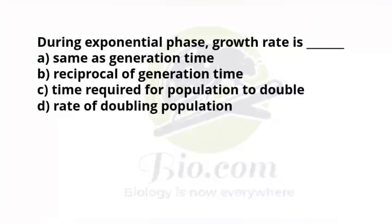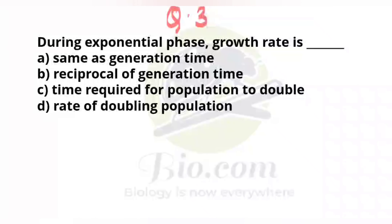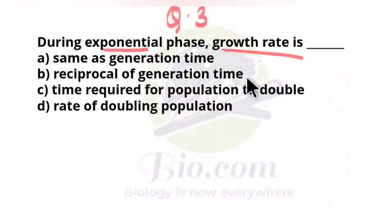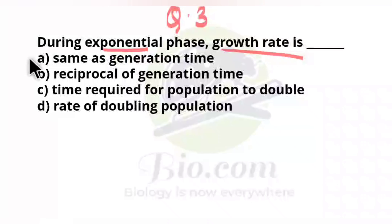Question 3: During the exponential phase, the growth rate is — same as generation time, reciprocal of generation time, time required for population to double, or rate of doubling population? During the exponential phase, the growth rate is the reciprocal of the generation time.